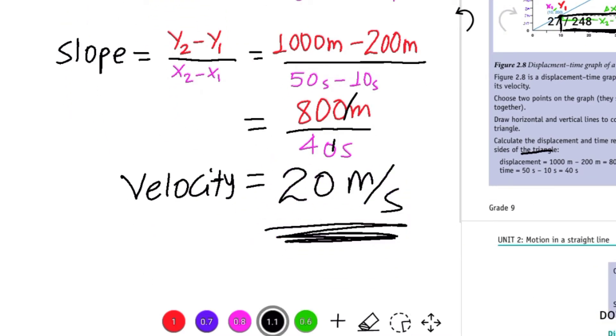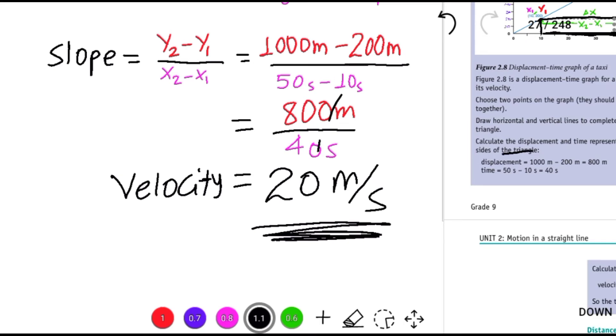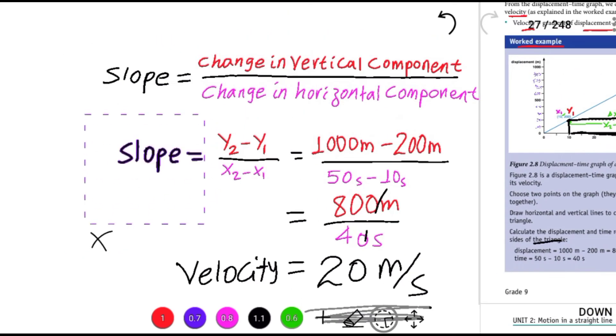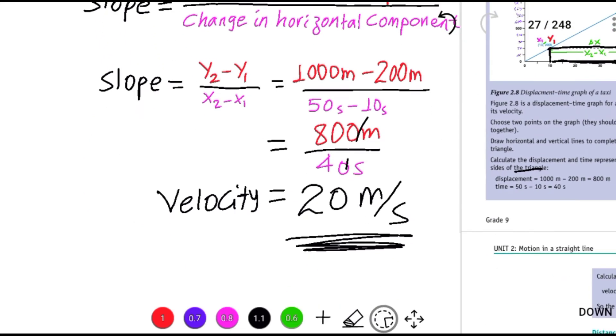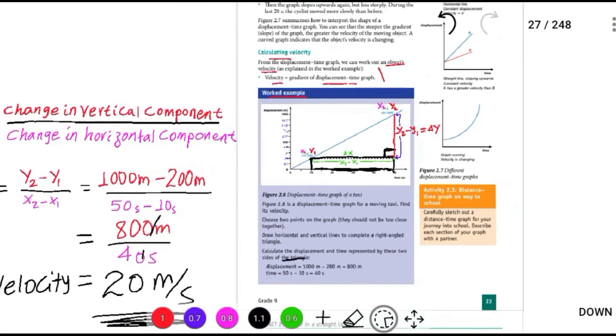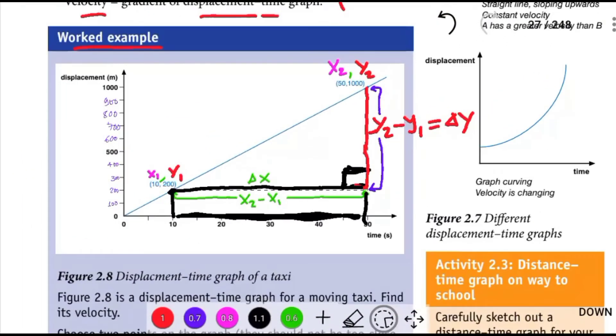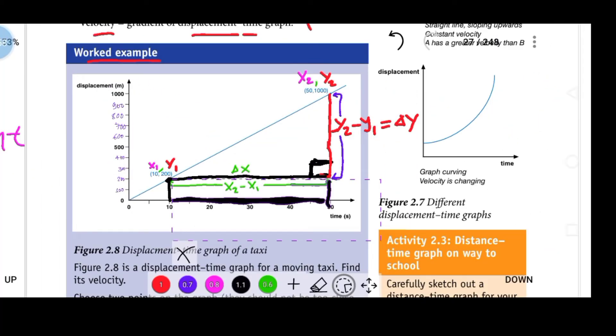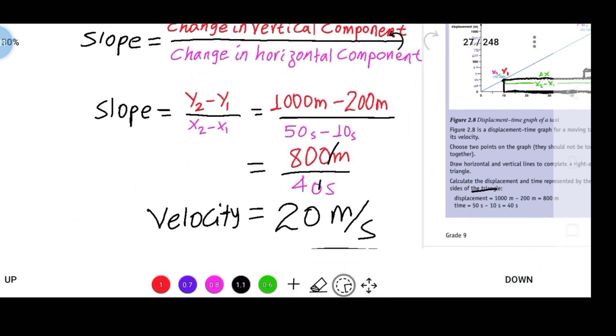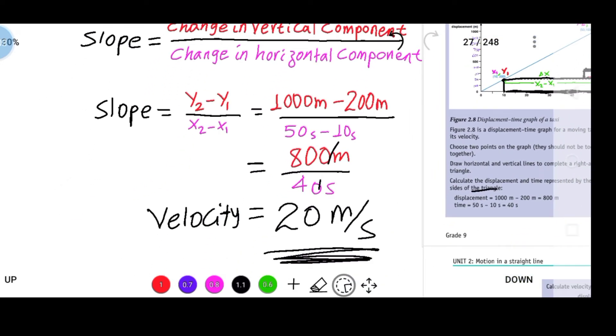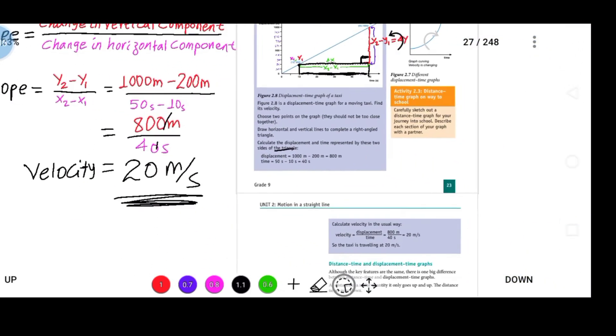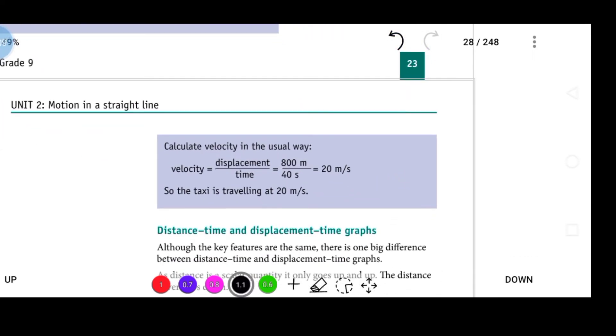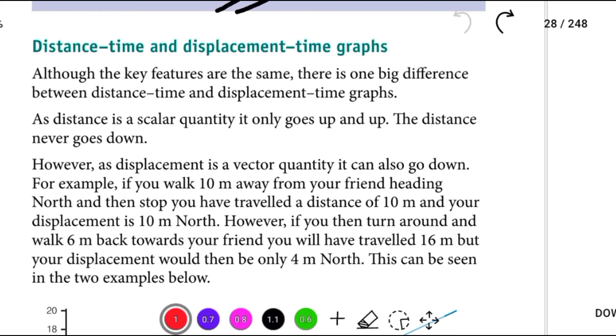The velocity is 20 meters per second. This shows how to find velocity from a displacement-time graph - the velocity equals the gradient of the displacement-time graph.